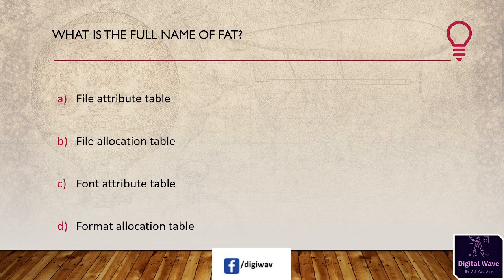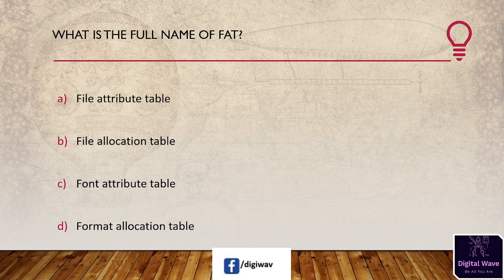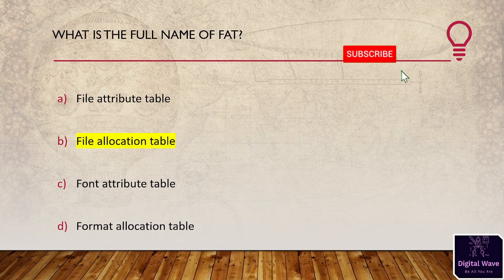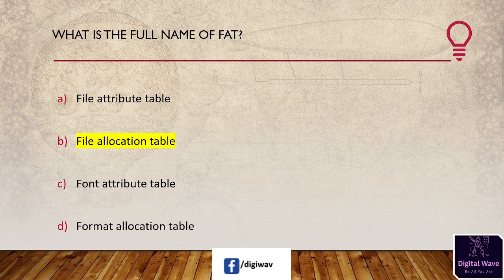Next question: what is the full name of FAT? Options: File Attribute Table, File Allocation Table, Font Attribute Table, Form Name Format Allocation Table. The right answer is B, File Allocation Table. FAT stands for File Allocation Table. It is a file system architecture used in computer systems and memory cards, and it indicates which field is used for which file.